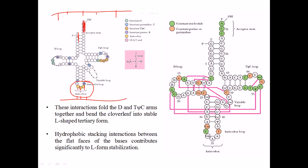We have the D-loop on one side and the T-ψ-C loop on exactly the opposite side. The T-ψ-C loop contains pseudouridine — that's why we call it the T-ψ-C loop, because it has thymine, pseudouridine, and cytosine one after another. On the opposite side, we have the D-loop with GC and adenine nucleotides. This is the stable secondary structure, and there is also a small variable loop between the anticodon loop and T-ψ-C loop.